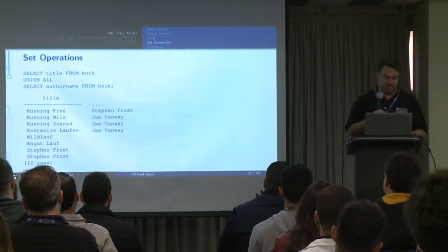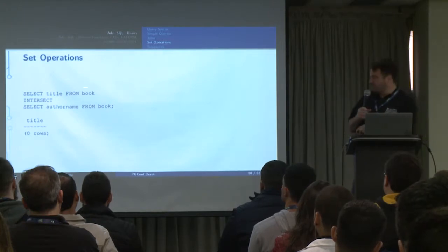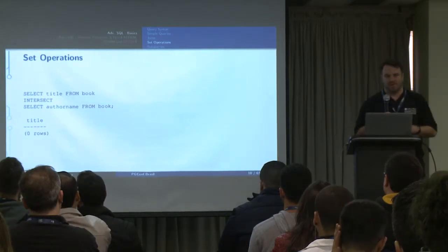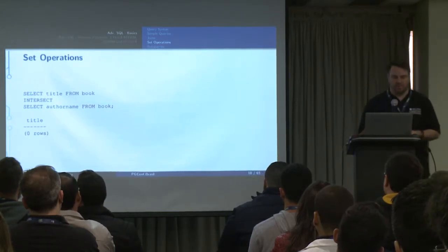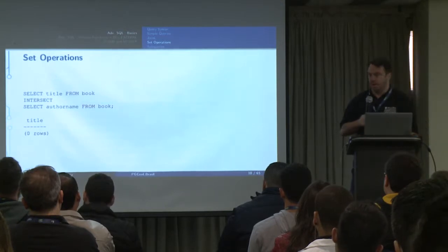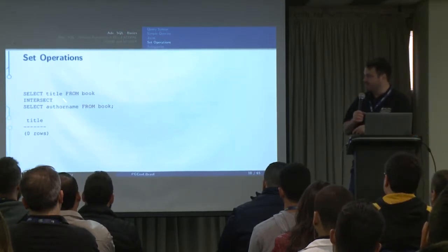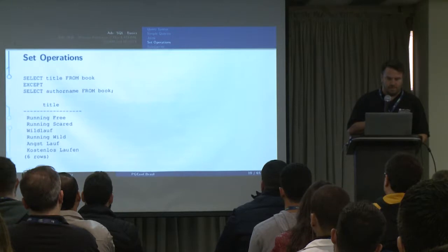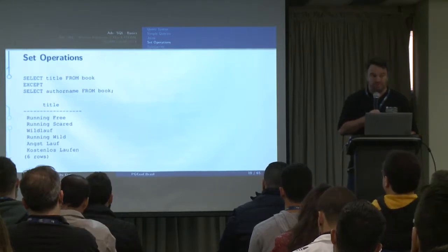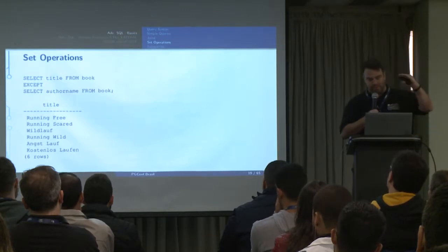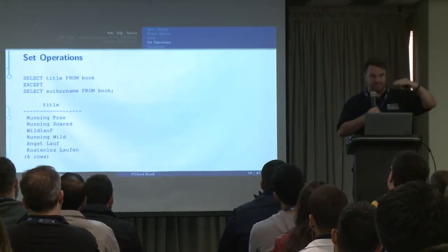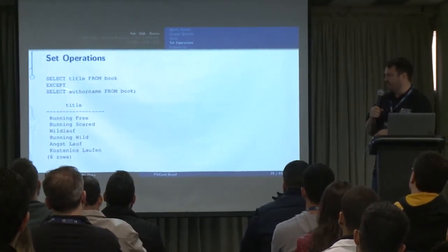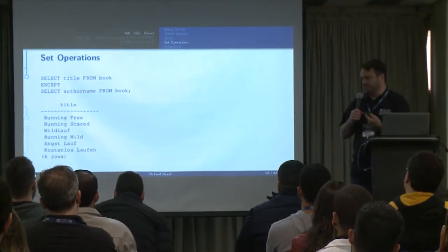UNION ALL doesn't have to worry about duplicates — it just appends the records, so it ends up being very fast. You can also do an INTERSECT, which gives you things that are in common to both sets — a set overlap. Here there isn't anything coming out because there aren't any entries where the title and the author name are the same. You can also use EXCEPT — in Oracle this is called MINUS — which gives you everything from this set except things that exist inside of the other set.